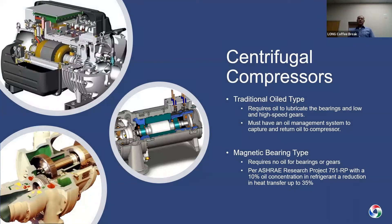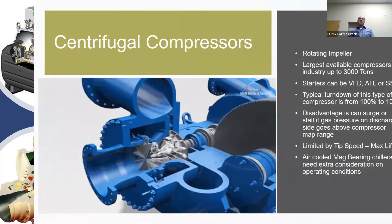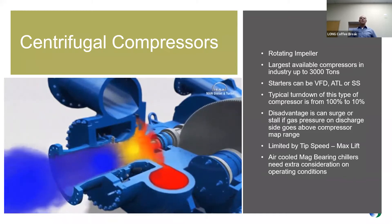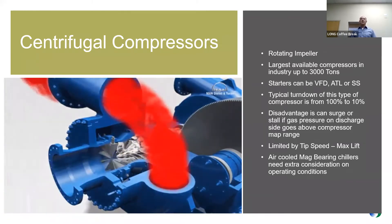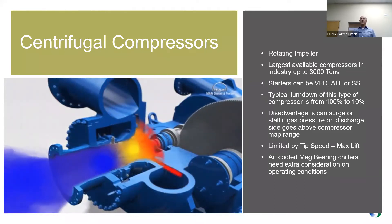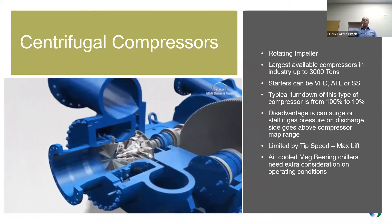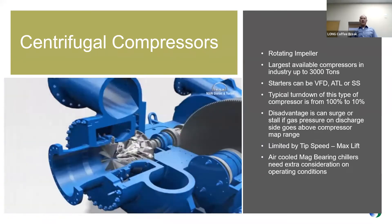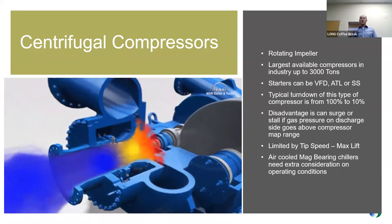Dynamic compressors are centrifugal compressors. There are multiple types — there's a traditional oil type and also a magnetic bearing style of centrifugal chiller. With the traditional oil type, you have a rotating impeller that draws refrigerant gases through and, through centrifugal force, pushes them through a very small slot out to the discharge and into the condenser side. These are made up to approximately 3,000 tons, allowing very large systems within a small footprint.